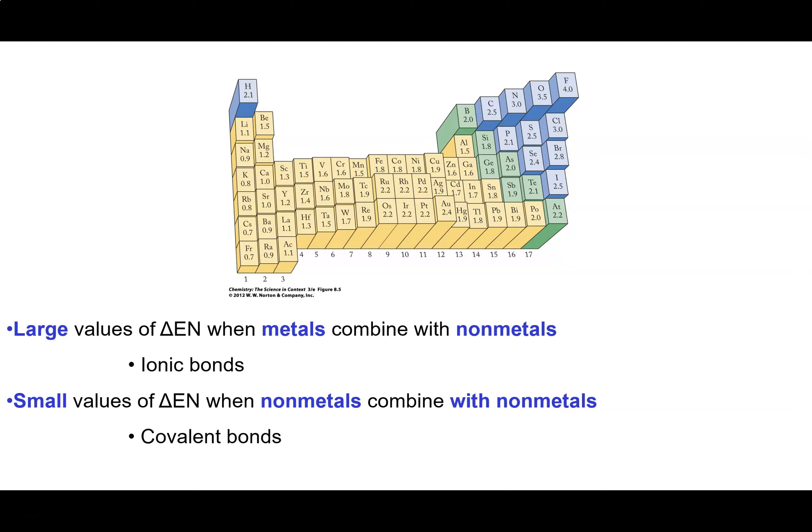So when do we get large differences in electronegativity? When we have metals combining with non-metals. And so in this case we don't have sharing of electrons at all. We have transfer of electrons to the non-metals. We form what we call ionic bonds.